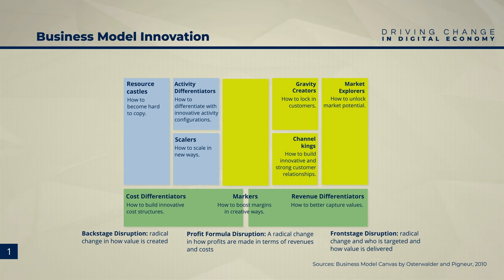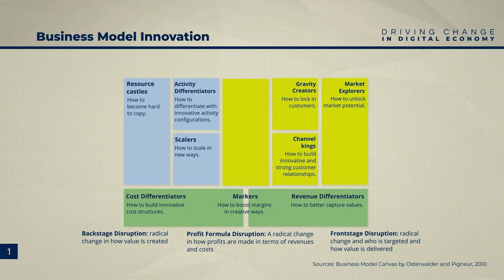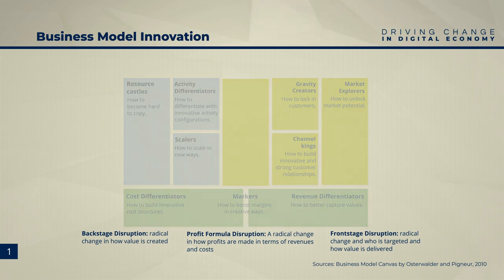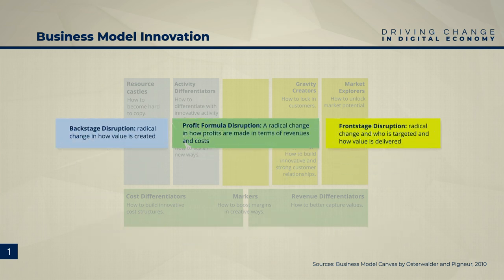A very common approach to business models and their representation is the Business Model Canvas by Osterwalder and Pigneur. This consists of nine fields. Building on this representation of business models, we now examine how business model innovations work. For this purpose, the concept of business model patterns was developed, which represents three different epicenters of innovation: front stage disruption, backstage disruption, and profit formula disruption.